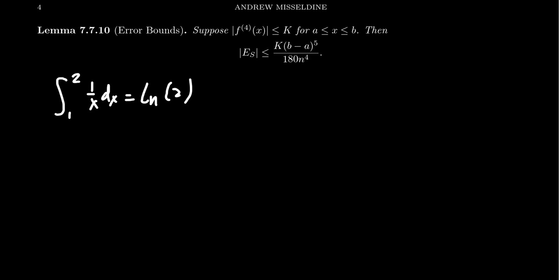So we're trying to approximate the natural log of 2 right now. Now, if we were to apply this error bound to the setting, notice that our function f(x) is 1 over x. And we've done these derivatives already. So the first derivative is going to be negative 1 over x squared. The second derivative, we already know, is going to be 2 over x cubed.